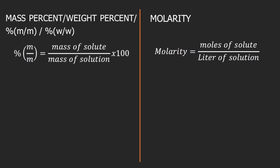Now let's have a quick recap about mass percent and molarity. Mass percent is also known as percent by mass, weight percent, percent by weight, or you can encounter symbols like percent m/m or percent w/w. The formula for mass percent is mass of solute divided by mass of solution times 100. Another way to look at it: since 'cent' means 100, mass percent is mass of solute per 100 grams of solution.